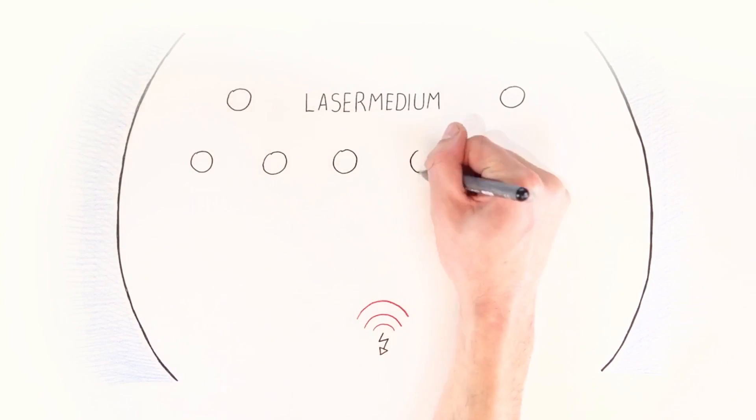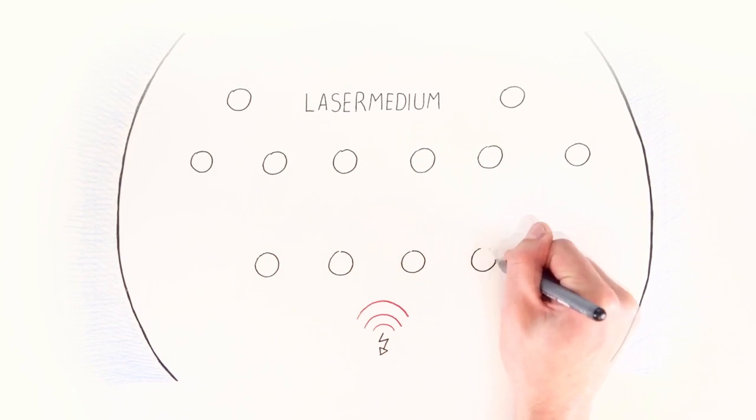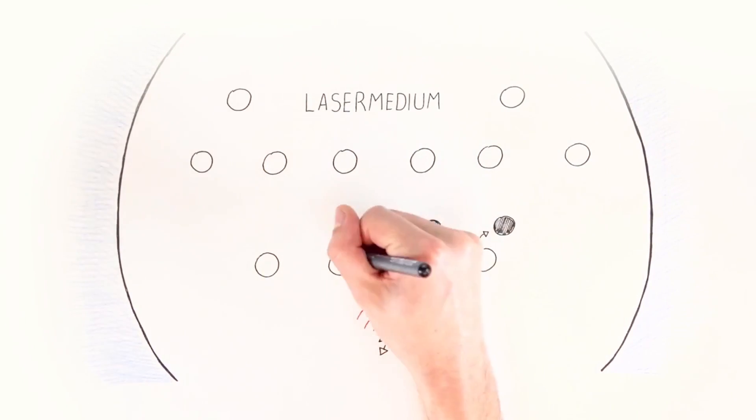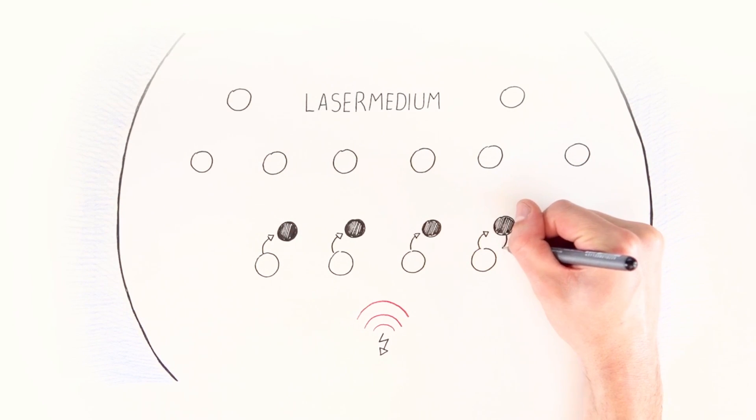The laser medium consists of particles that are in their basic state. The pump feeds energy into the particles, and they rise to a higher energy level. If any of these particles fall back into their basic state, energy is released in the form of a photon, also called light quantum.